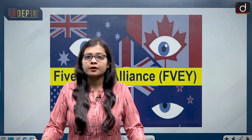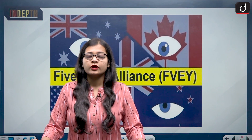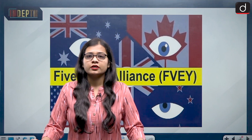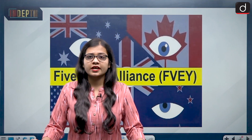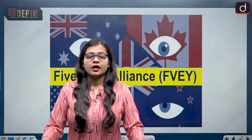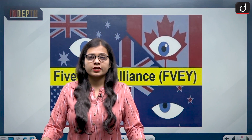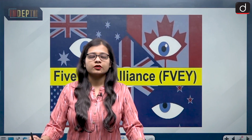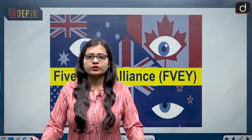Since the time Canada Prime Minister Justin Trudeau claimed India's involvement in the killing of Hardeep Singh Nijjar, the tensions between India and Canada seem to be escalating to new highs. Now there is one more point involved in it, and that is the Five Eyes Alliance.